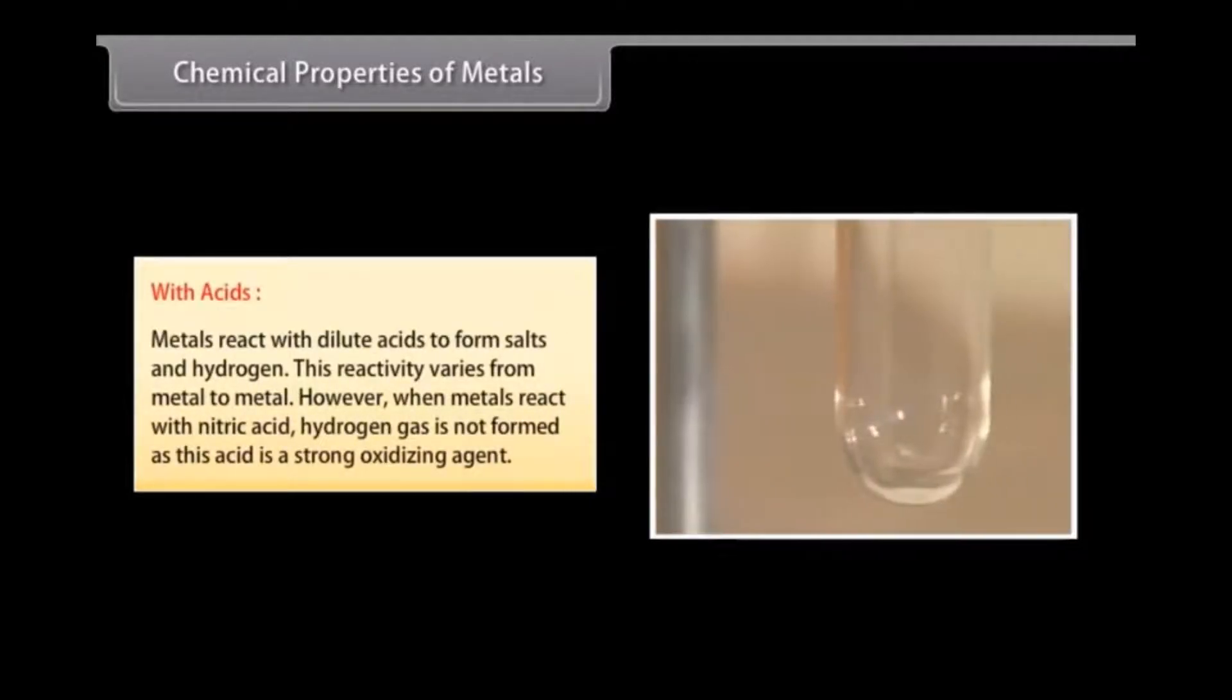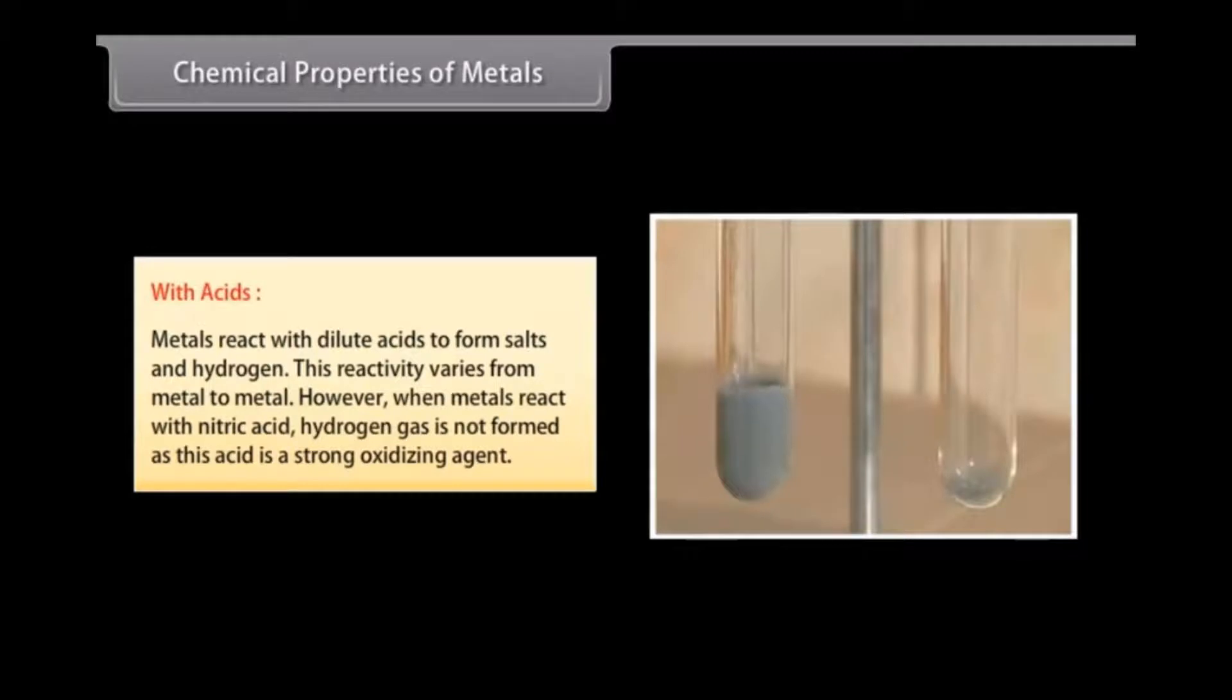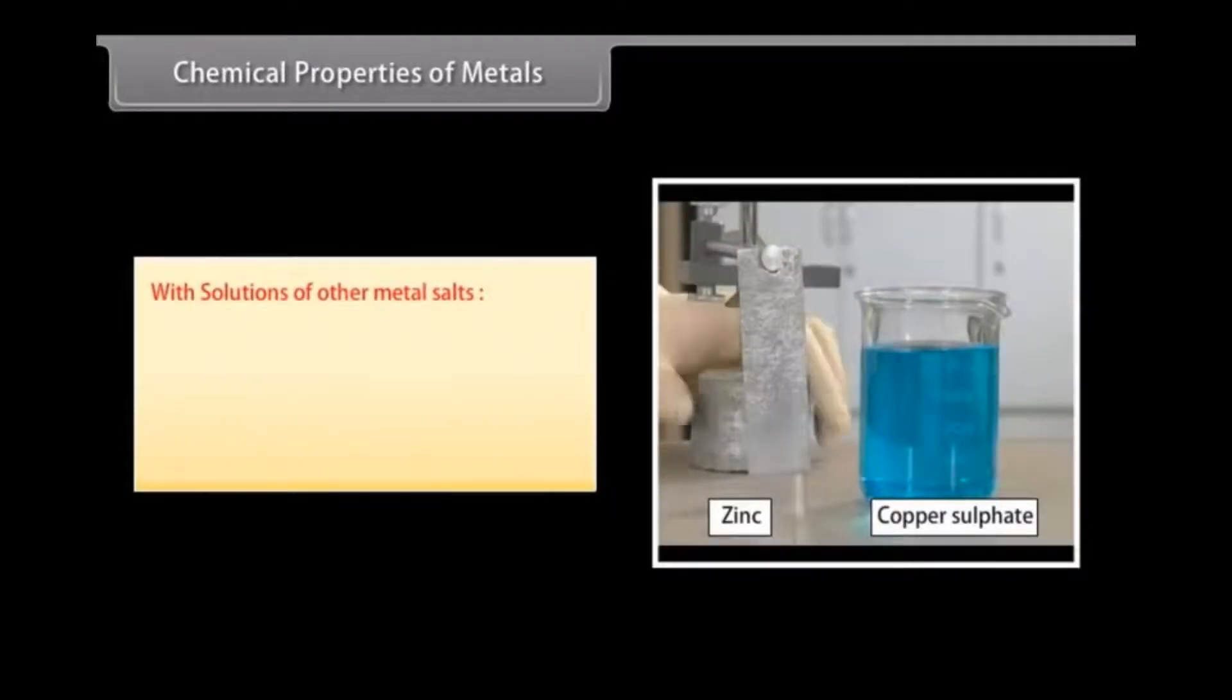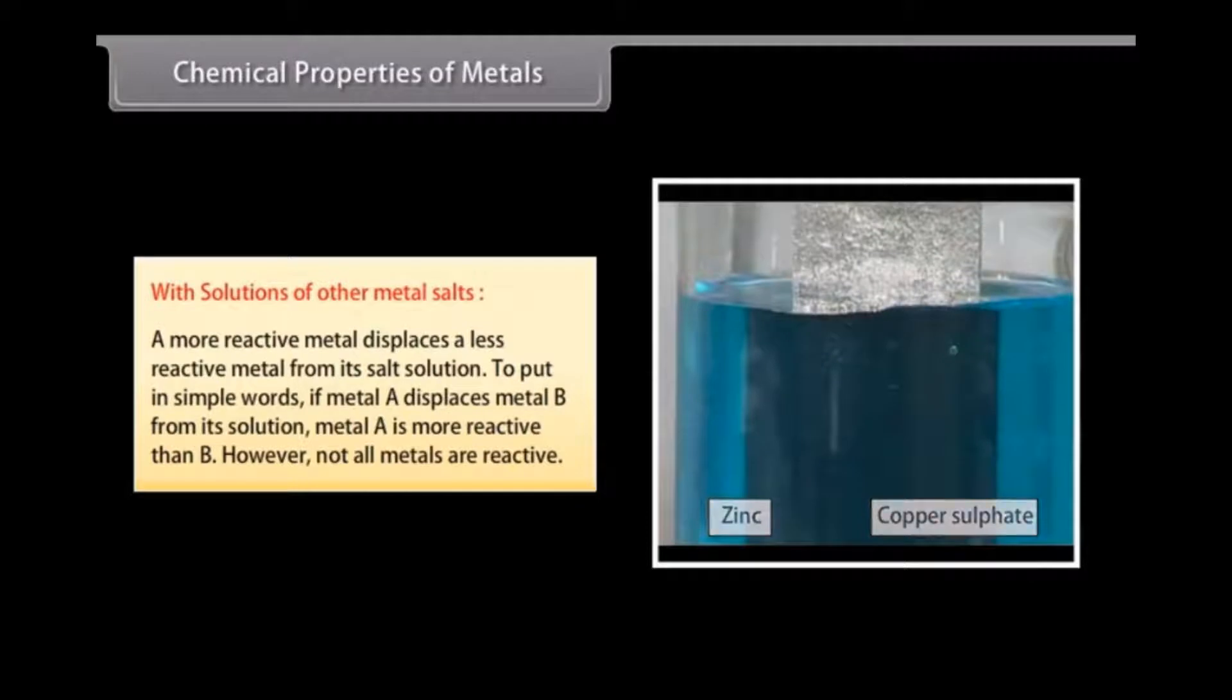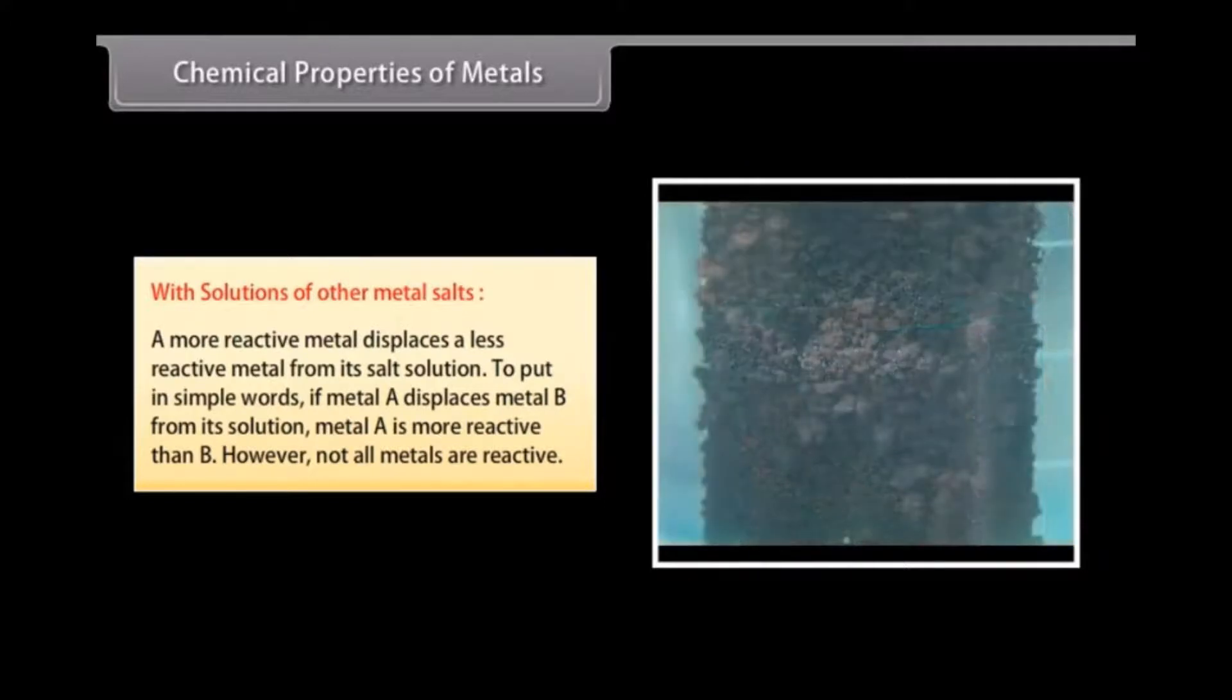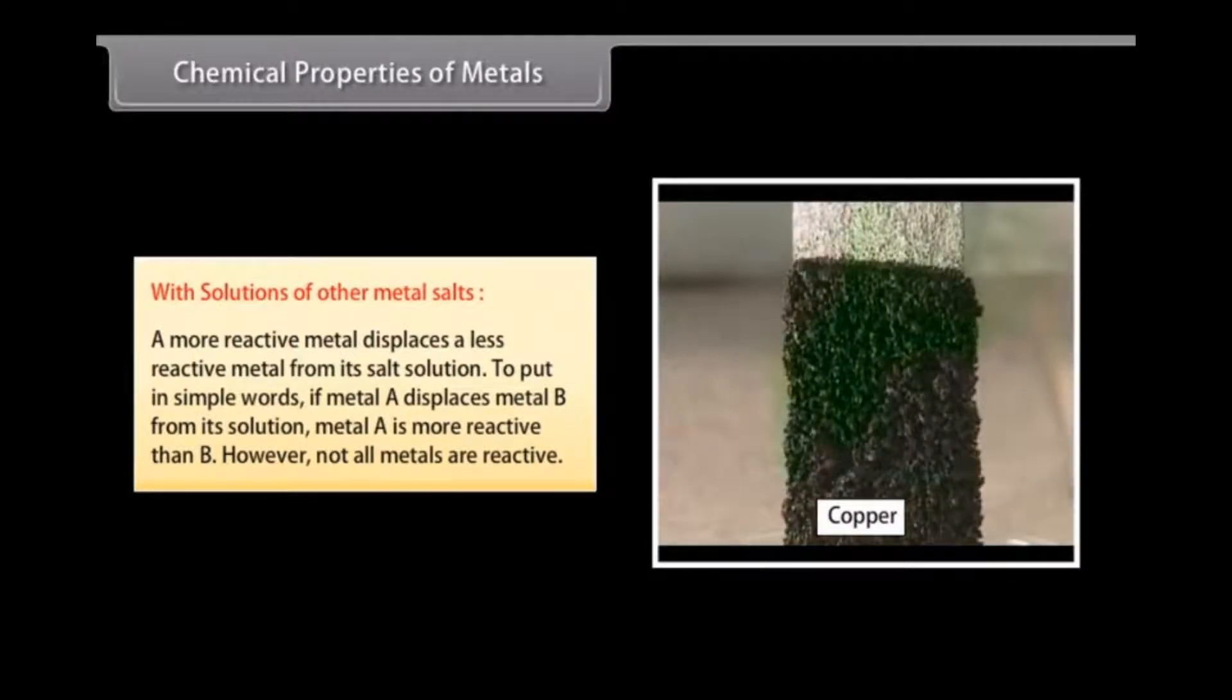With acids: Metals react with dilute acids to form salts and hydrogen. This reactivity varies from metal to metal. However, when metals react with nitric acid, hydrogen gas is not formed as this acid is a strong oxidizing agent. With solutions of other metal salts: A more reactive metal displaces a less reactive metal from its salt solution. To put in simple words, if metal A displaces metal B from its solution, metal A is more reactive than B. However, not all metals are reactive. In this reaction, the copper contained in the copper sulfate is replaced by zinc.